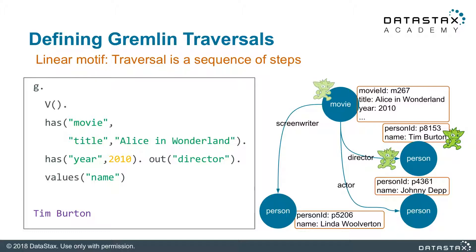Let's look at those steps more closely. The first step is we want only vertices that have a title Alice in Wonderland — that is the line that says 'has title Alice in Wonderland.' The second step is also 'has,' and we use it to only find those vertices where year is 2010. Our Gremlin should end up on the vertex with the title Alice in Wonderland and year 2010. Next, the 'out' step instructs the traverser to traverse all outgoing edges with label 'director.' The traverser should end up on the person vertex as shown in the illustration. Finally, the 'values' step tells the traverser to get the name property of that vertex and return its value. And as you can see in the result, we get Tim Burton.